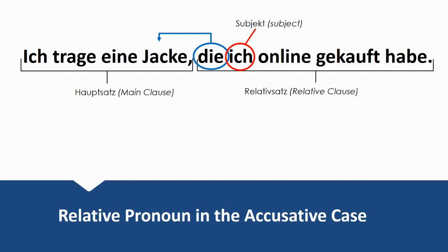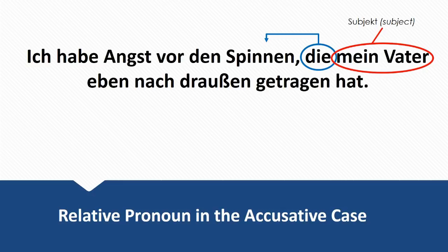Next example: Ich trage eine Jacke, die ich online gekauft habe. I'm wearing a jacket that I bought online. In this relative clause, ich is the subject — I bought the jacket, I have the active part. Next example: Ich habe Angst vor den Spinnen, die mein Vater eben nach draußen getragen hat. I'm afraid of the spiders that my dad just carried outside. Mein Vater is the subject — he carried the spiders outside — so die is in the accusative case.